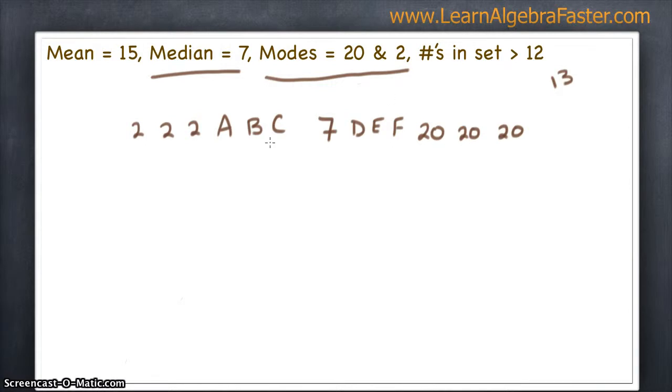Now, you notice how I just guessed and thought that maybe A, B, and C would come between 2 and 7, and D, E, and F would come between 7 and 20. It doesn't really matter. We will end up solving for these, and then you can rewrite them all in order at the end.